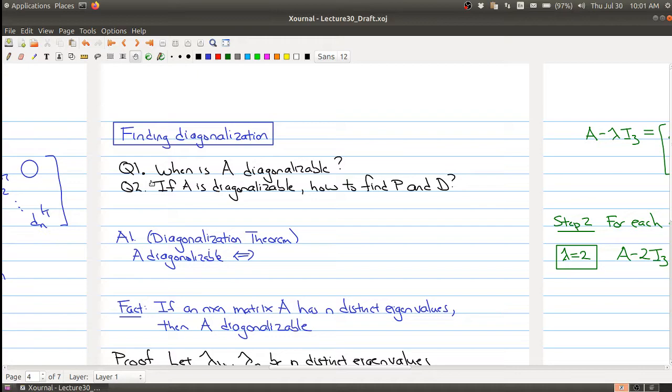So the first answer actually is quite nice. It's called the diagonalization theorem, and it tells me that A is diagonalizable if and only if A has n linearly independent eigenvectors. So you look at the eigenvectors of your matrix, and if you can find n linearly independent ones, then you know your matrix is diagonalizable.